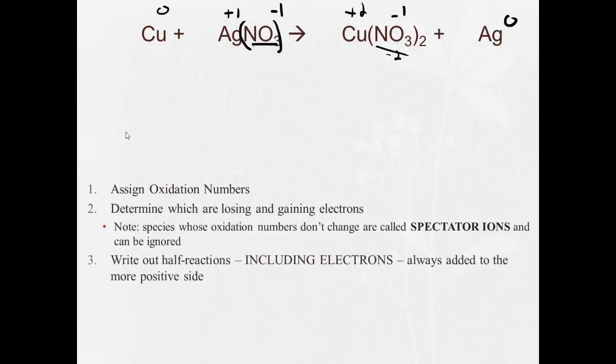Alright, so now we're going to write out what's called half reactions. And we look here, we see Cu is going to become Cu with a plus two charge. Now notice I left some space here. Now when Cu becomes Cu plus two, it does so by giving up two electrons. So it gives up two electrons.